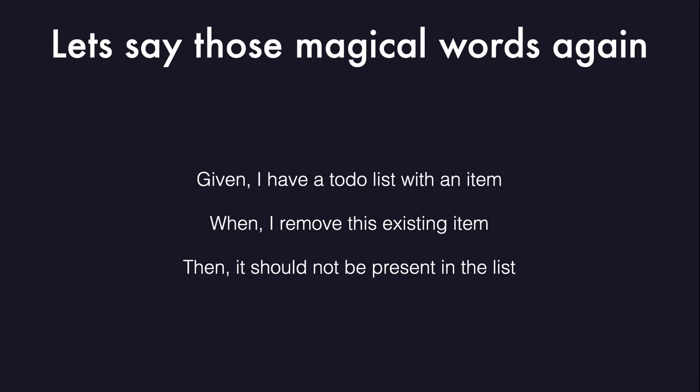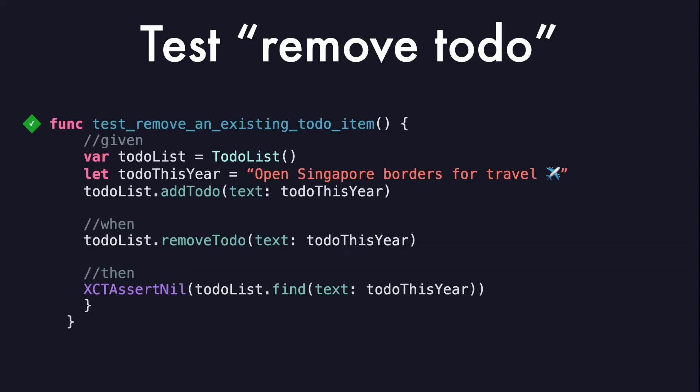Using those three magical words: given I have a to-do list with an item, when I remove the existing item, then it should not be present in the list. After converting those sentences into code, given the to-do list has one item in it, when I remove it, it should not be present. Notice how dividing the code into three sections instantly makes it more readable.